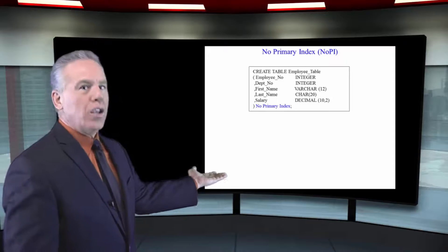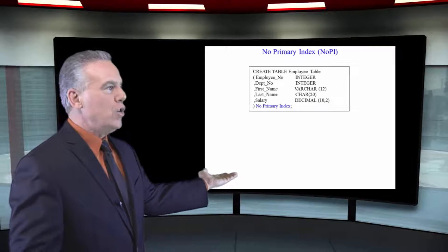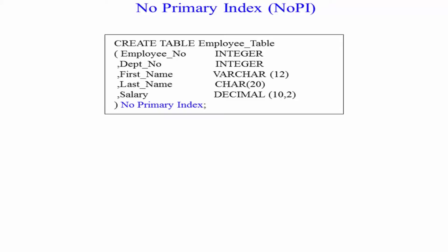And of course, we've got, what's it called? You know it. What's its nickname? NUPI table, because it's got no primary index.